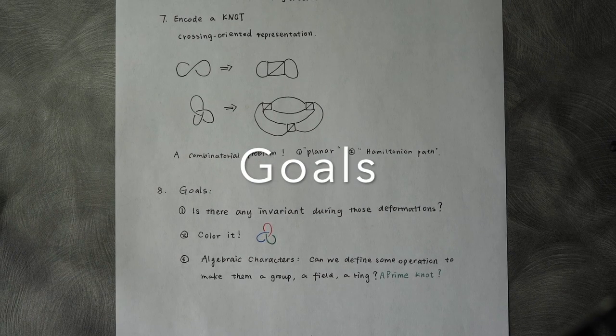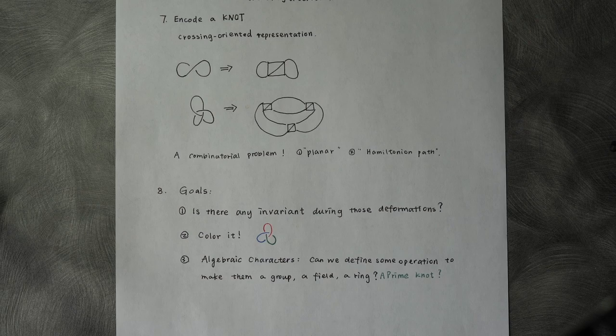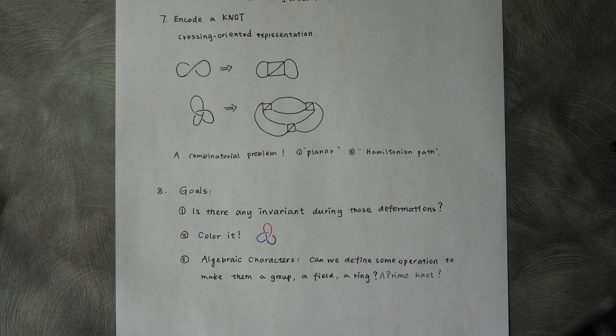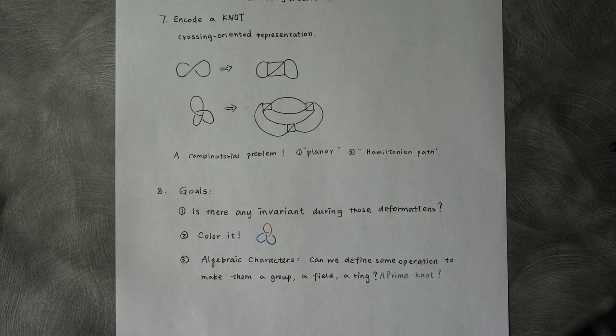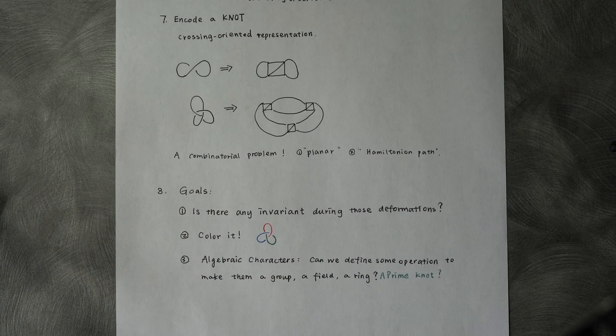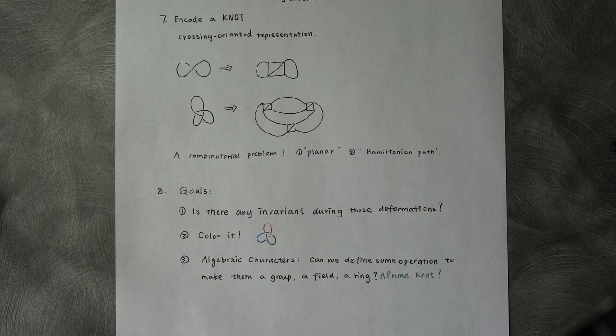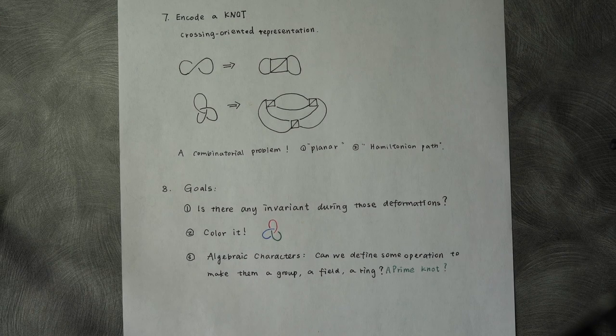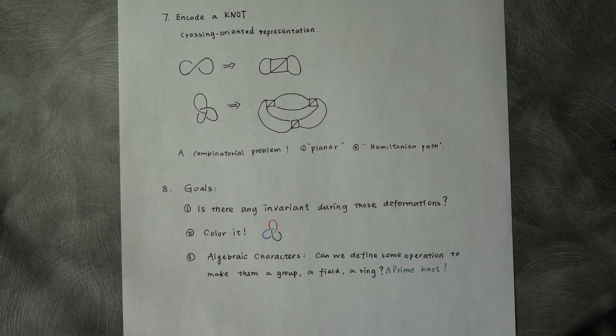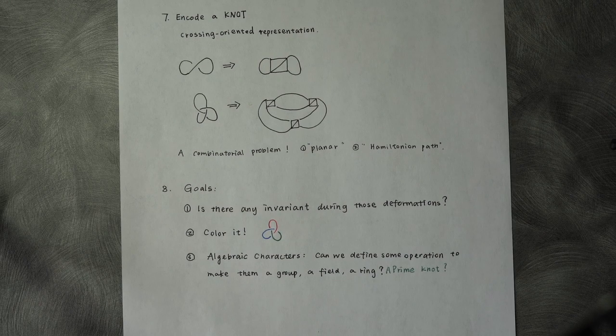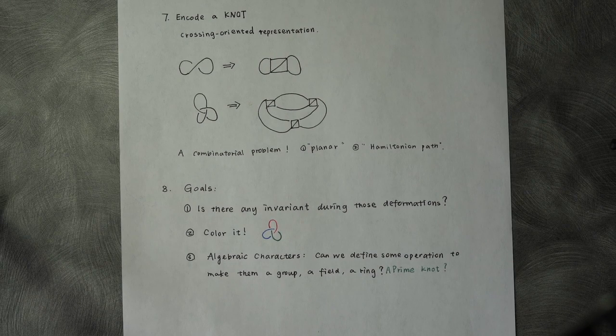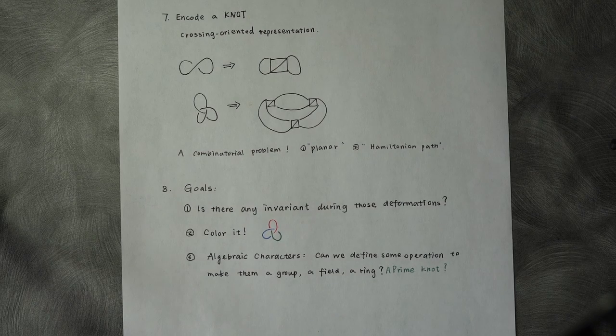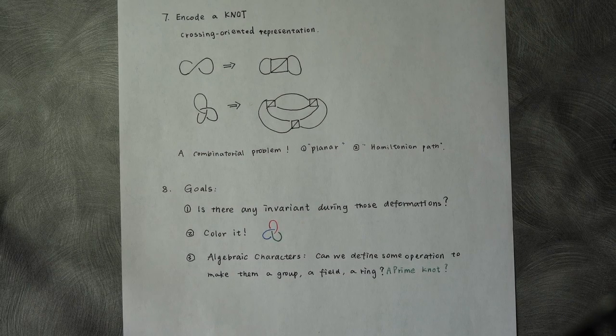For our future goals, we want to know, is there any invariant during those deformations? And as a common combinatorial problem, we want to know whether we can color it, how many colorings we can have. As for its algebraic characters, can we define some operation to make those knot classes a group, a field, or a ring? Is there any prime knot accordingly? Gabriel and Alex will answer those questions.